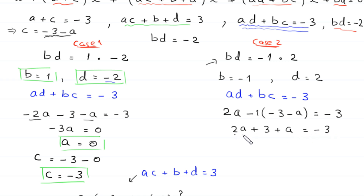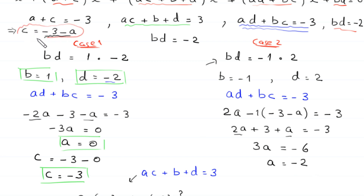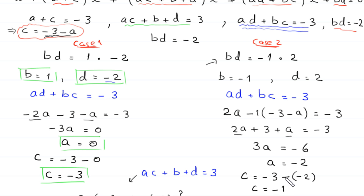Subtracting 3 from both sides: 3a = -6, so a = -2. Then c = -3 - (-2) = -3 + 2 = -1. So from Case 2: a = -2, b = -1, c = -1, d = 2.